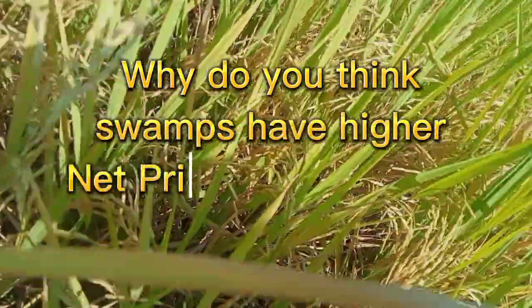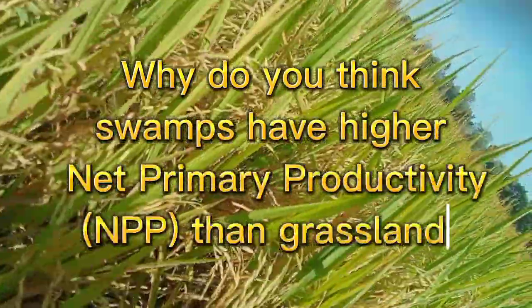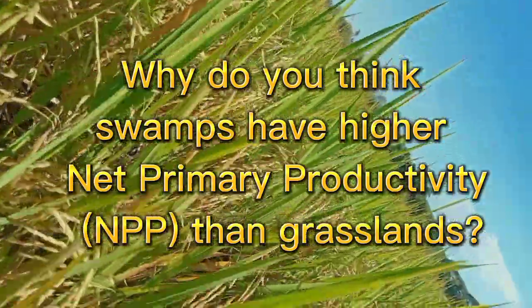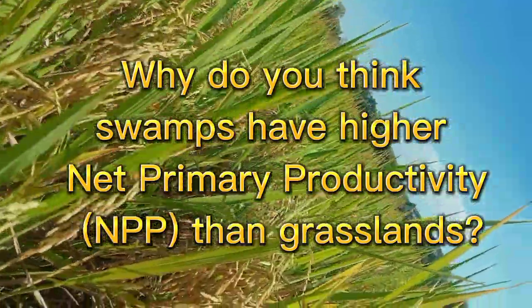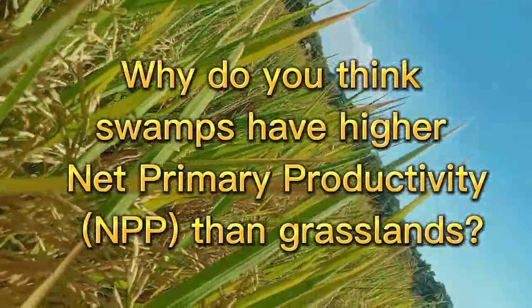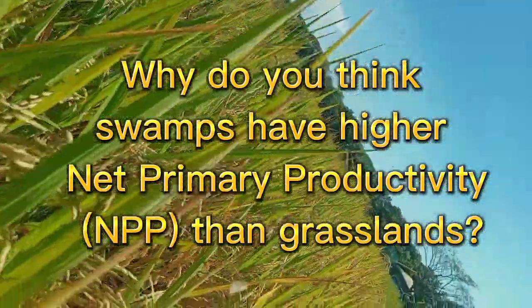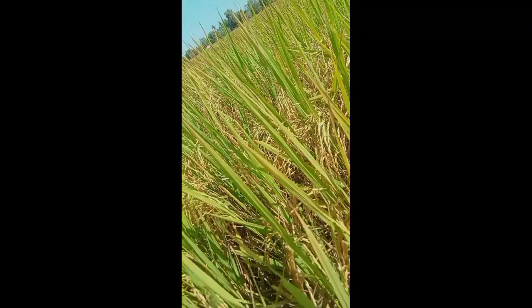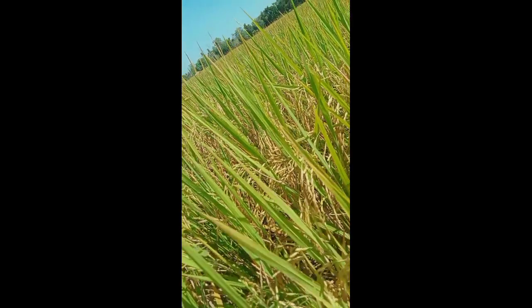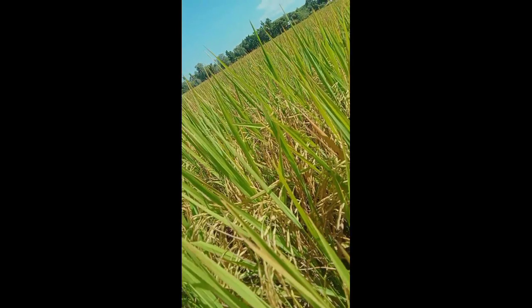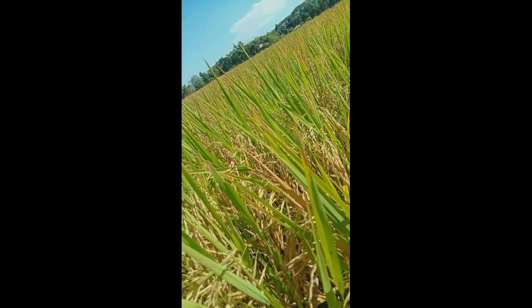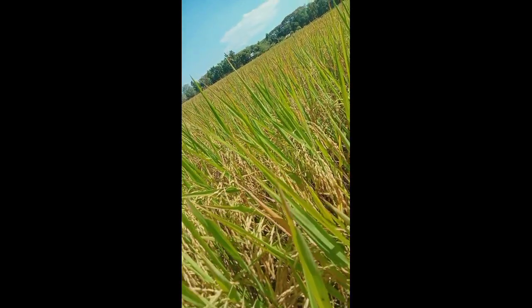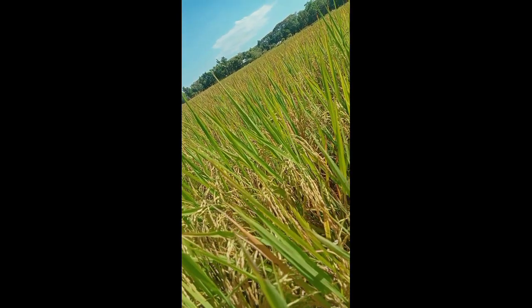Why do you think swamps have higher net primary productivity (NPP) than grasslands? Generally, plant production depends on light, water, nutrients, and toxins. The sedimentary soil is generally rich in nutrients, so you would expect uniformly high production.